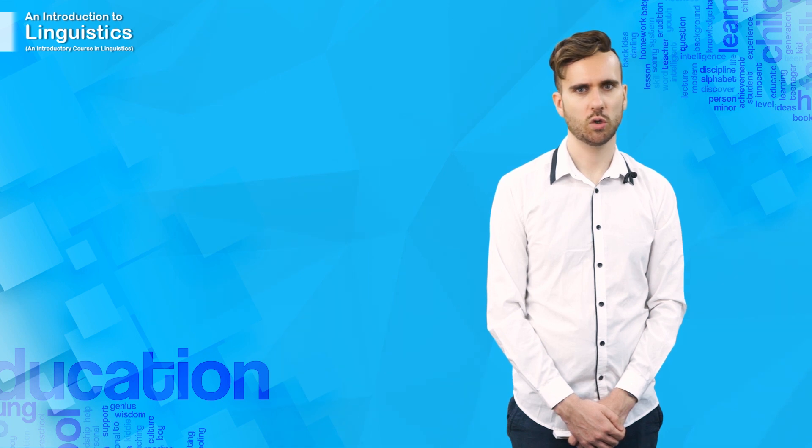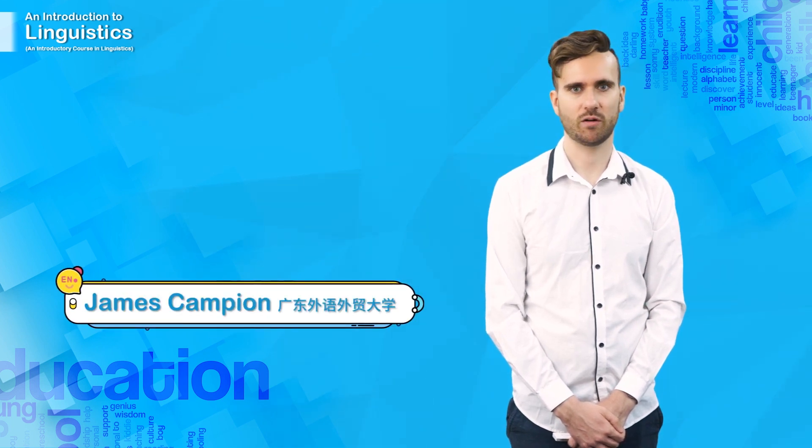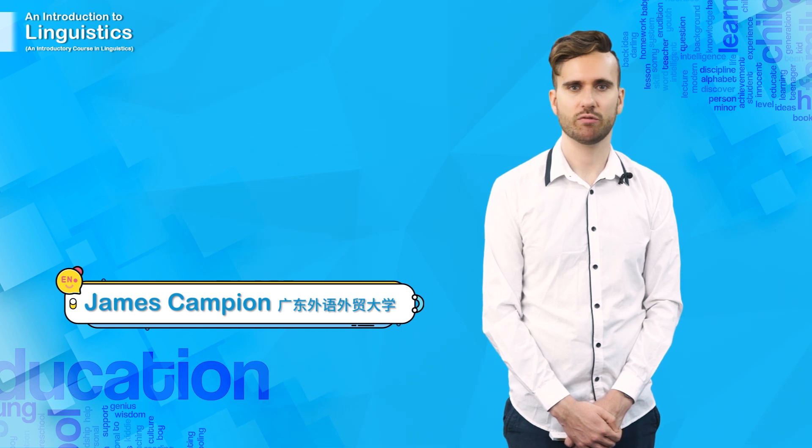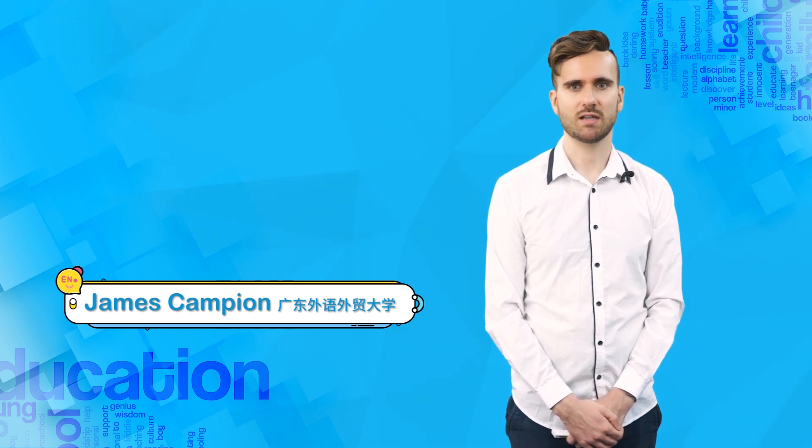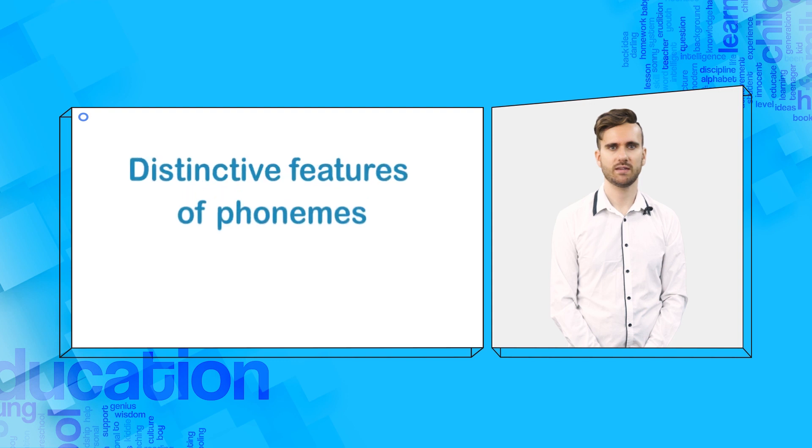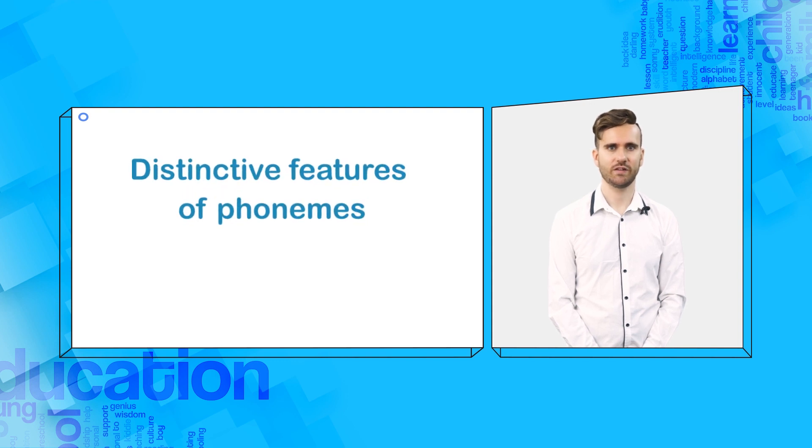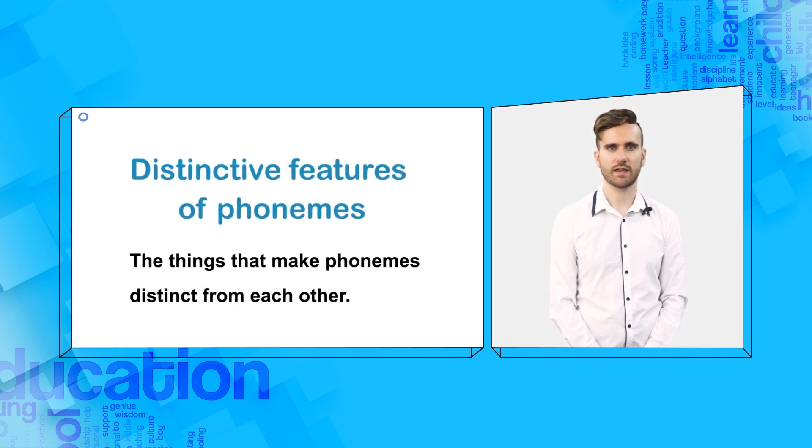One conclusion to make so far is that phonemes are distinct from each other, because changing a phoneme in a word creates a distinct or a separate word. In the previous unit of this MOOC, we discussed several features of phonemes which make them distinct sounds. These are called distinctive features, because these are the things that make phonemes distinct from each other.